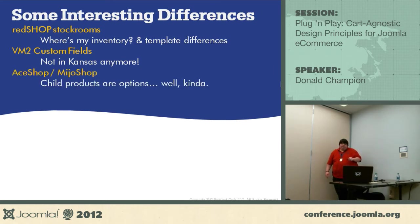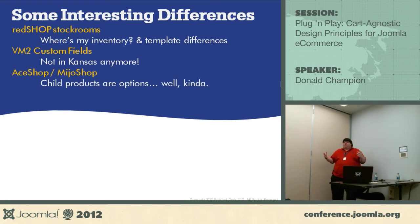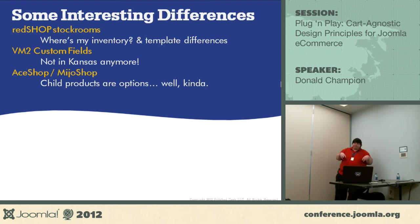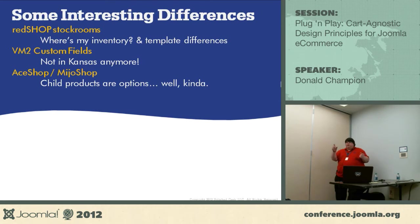AceShop and MijoShop: child products are options — kind of. They recently split and are both based off of OpenCart. You can do quantity — they each have their own quantity and each can have their own price. But you can't change the picture, you can't change the description. You can change a title, but there are certain pieces you can't change that you'd expect from a child product, because there's nothing there for it.